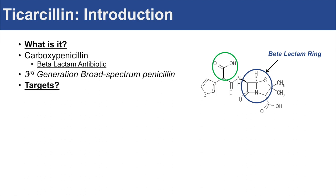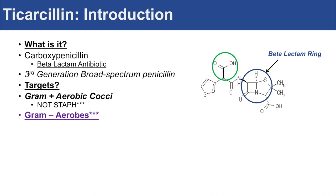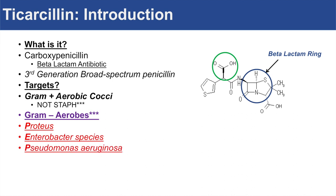So what are some of the targets of Ticarcillin? Ticarcillin, because it's a penicillin, has activity against gram-positive aerobic cocci, but not staph. So it has effects on Streptococcus, but not Staphylococcus bacteria. Its main use is for gram-negative aerobes, including Proteus, Enterobacter species, and Pseudomonas aeruginosa — remembered as PEP.